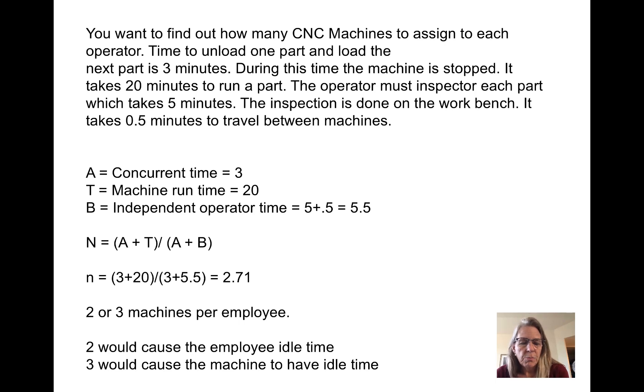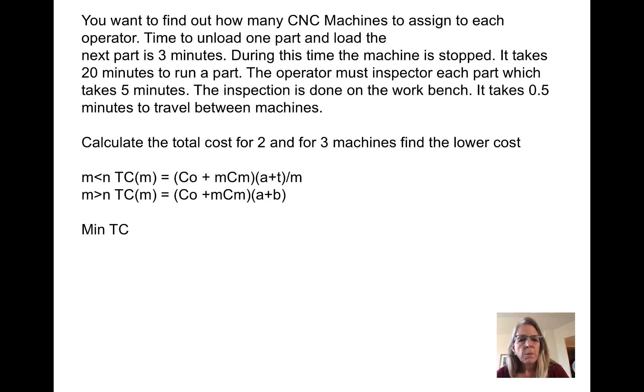We can't assign 2.7 machines, only two or three. If we assign two, it would cause the employee to be idle part of the time. If there were three, the machine would be idle part of the time. So which is better, two or three? What we're going to do is calculate the total cost for two machines and for three machines.